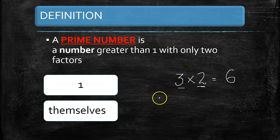Let's see. The number 3 has two factors. I will multiply the factors.